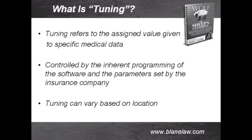This is controlled by the inherent programming of Colossus and what the insurance company sets it to, given certain parameters. For example, depending on where an injury occurred would partly dictate the value of a case. Zip codes are important. The zip codes of where an injury happened are used by the system because zip codes are used by the legal system to tell a lawyer which courthouse a lawsuit would be filed in, if needed. Different value ranges on certain injuries are given by juries in different parts of a given state.